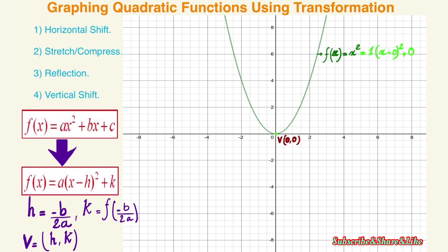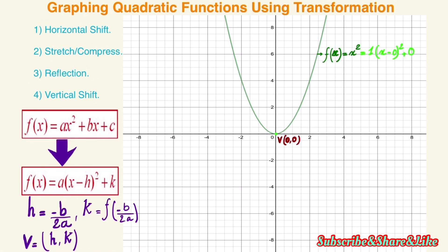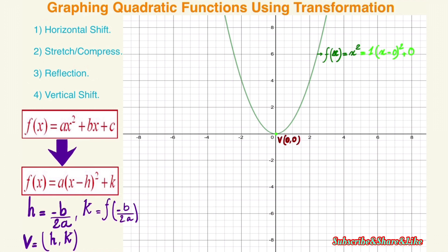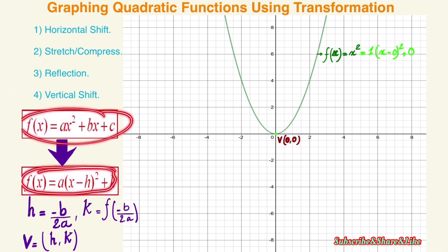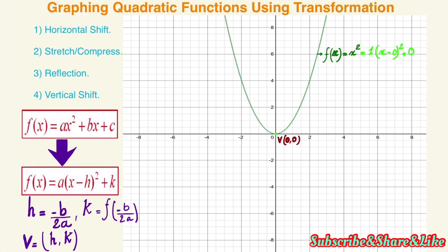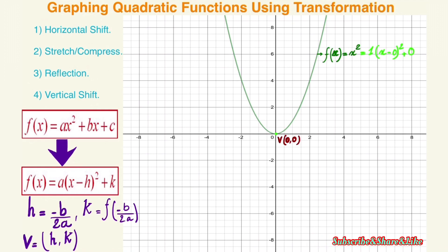The standard equation of a quadratic function is f(x) = ax² + bx + c. However, to apply the transformation, we convert this function to the form f(x) = a(x - h)² + k.